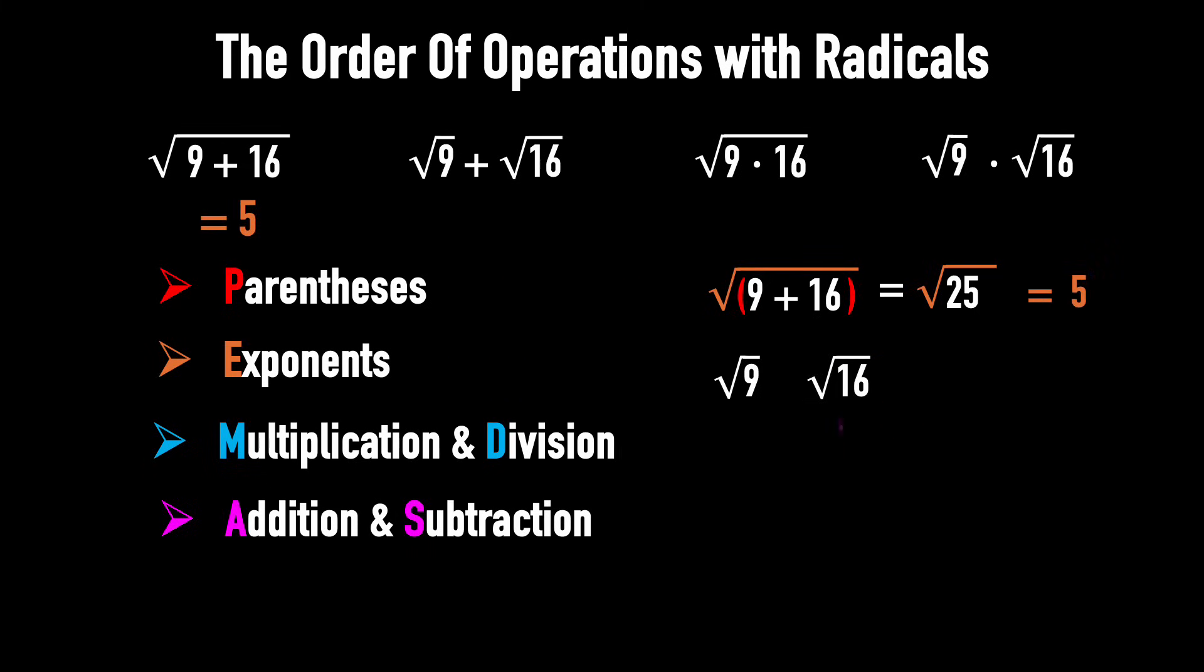Example 2. Find the sum of the square root of 9 and 16. Unlike example 1, 9 and 16 are under separate radical signs. They stand alone, so there are no parentheses like these in example 1.